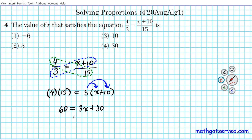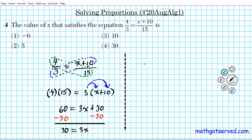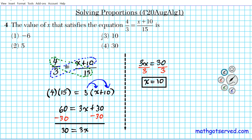Subtracting 30 from both sides: 60 − 30 = 30, giving us 30 = 3x. Switching the equation around: 3x = 30. To undo multiplication, divide both sides by 3. The 3s cancel, giving x = 30/3 = 10. That's the answer to question number 4, option number 3.